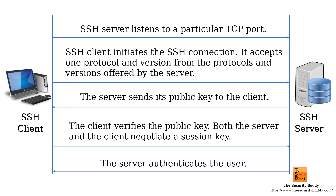Different methods of authentication can be used for this purpose. For example, in a password-based authentication, a user can provide his password and the password can be encrypted and sent to the server. The server and the client can also use an SSH key pair for authentication. Once the authentication is successful, the server and the client can exchange encrypted messages that are encrypted with the derived session key.